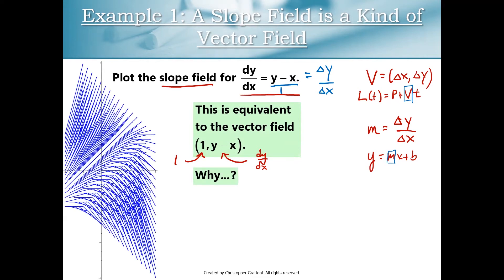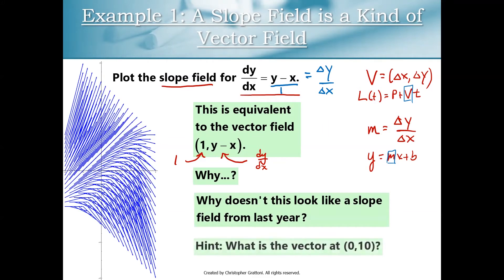Now I went into Mathematica and I plotted this for you. And what you guys are going to notice is this does not look like the slope fields you're familiar with from your Calc BC class. But the only reason this plot is poor quality is because these vectors are not scaled appropriately. For example, let's look at the vector that we would plot at 0 comma 10. We would get 10 minus 0, so that means that our field vector would be 1 comma 10. That's a really large vector.